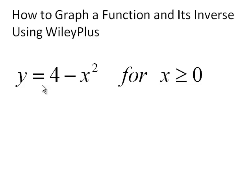Now at this point I'm assuming you already know how to graph y equals 4 minus x squared. We're going to restrict it to just x greater than or equal to 0 so that the function is one-to-one and has an inverse.